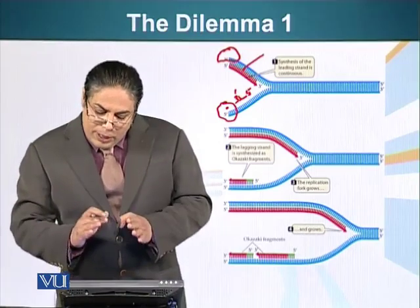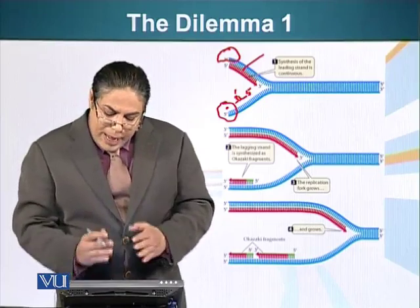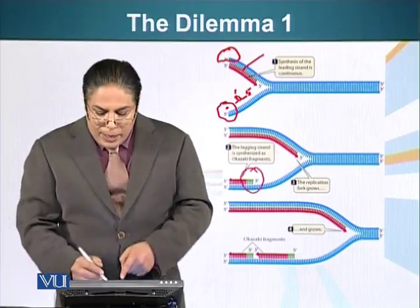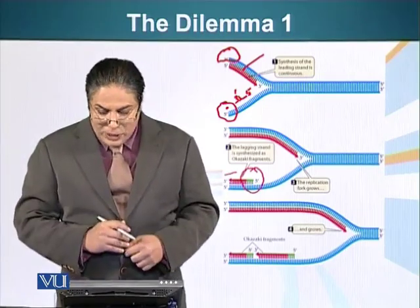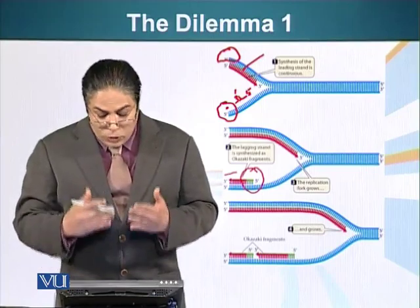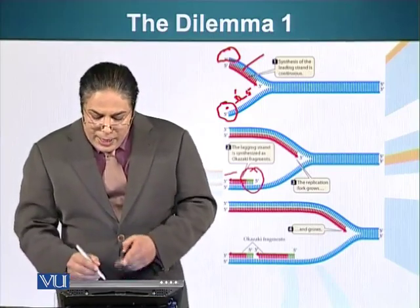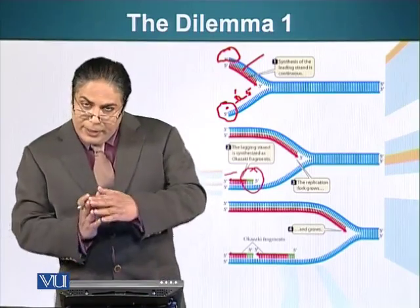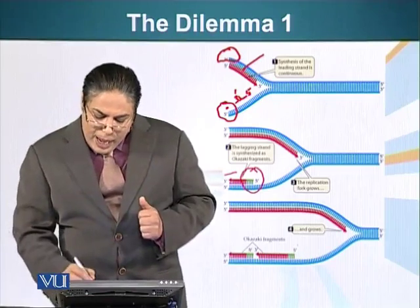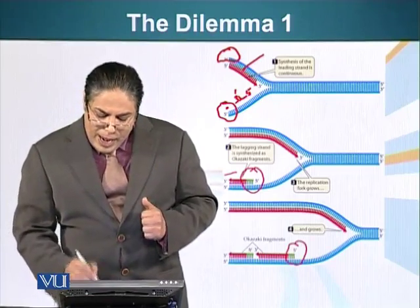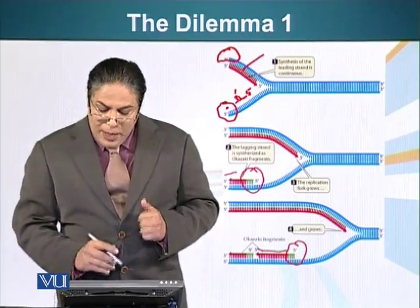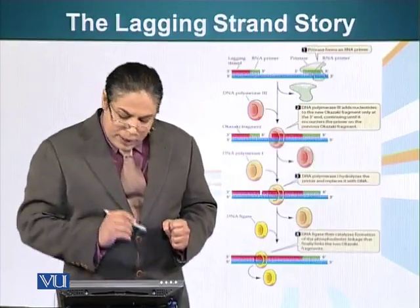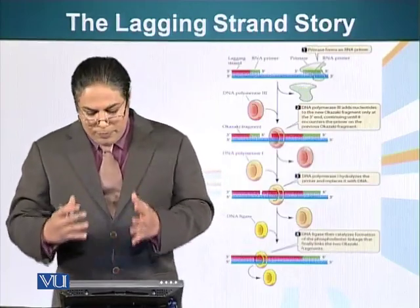So the lagging strand is made in smaller units. As the DNA space becomes available, primase will lay down the RNA primer. That primer will be extended by DNA polymerase three. After it has done its job, it will stop again when the helicase opens up more region of DNA. A new primer will be made and DNA polymerase will again extend this primer. This is how the lagging strand is synthesized.